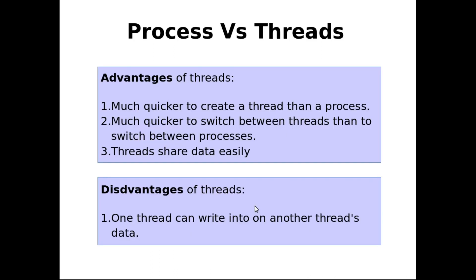There are other advantages of threads. Threads are much quicker to create than a process. It takes less time for the operating system to create a new thread than creating a new process, because for creating a new process we have to allocate a new stack segment, a new code segment, a new data segment — these are all extra overheads for the operating system. When we create a new thread, we don't have to allocate a new data segment or code segment. Also, switching between two threads is quicker than switching between two processes.